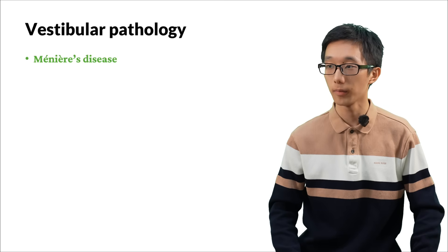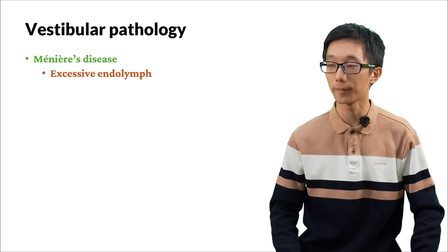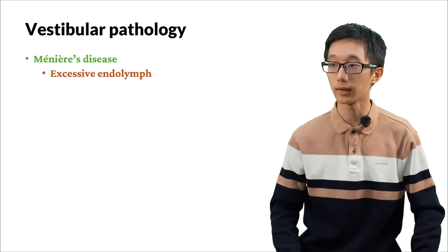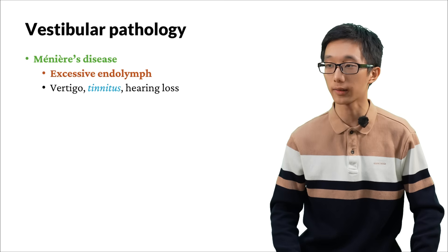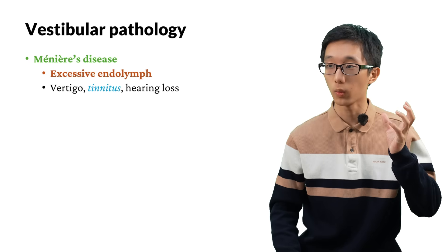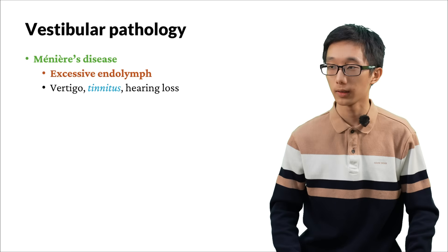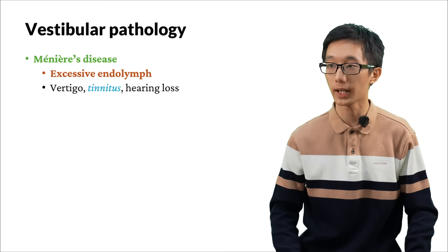Meniere's disease is caused by excessive endolymph. This creates problems both in the cochlea and the labyrinth. It may cause vertigo — which is part of its effects on the semicircular canals — and tinnitus and hearing loss, which are effects on the cochlea. Tinnitus means that we hear a sound when there isn't actually a sound. The excessive endolymph oppresses the hair cells in the cochlea, which creates the tinnitus.